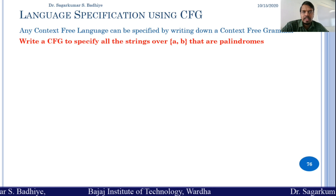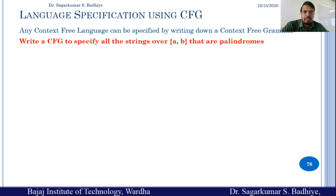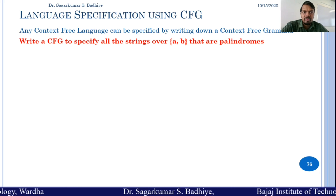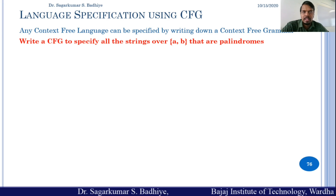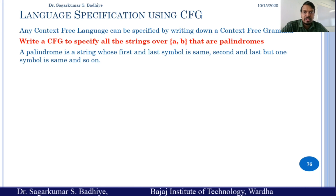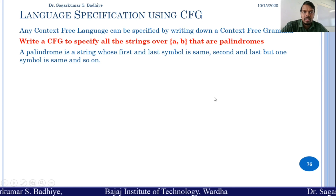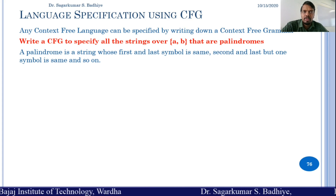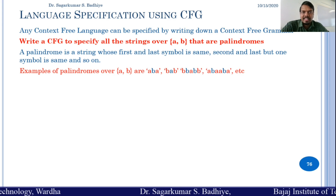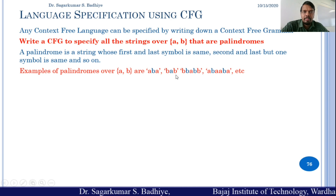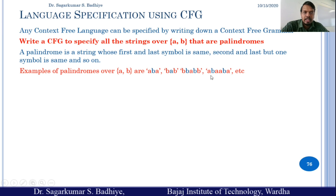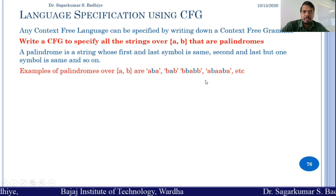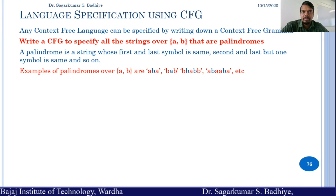Here we would be writing a context-free grammar to specify all the strings over A and B that are palindromes. Palindromes are those strings that when read from the front end or from the back end spell the same. That means a palindrome is a string whose first letter and the last letter are the same, the second symbol and the second last symbol are the same, and so on.